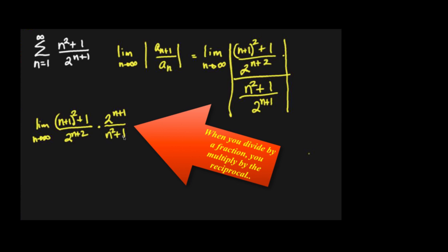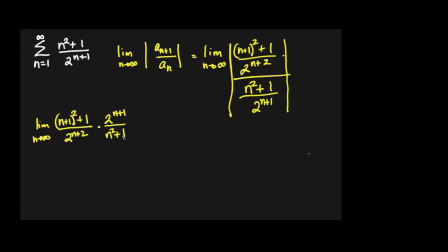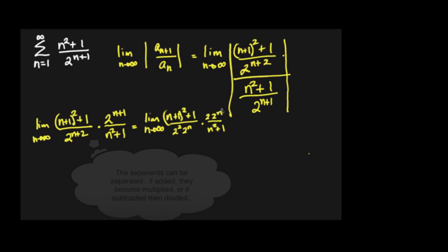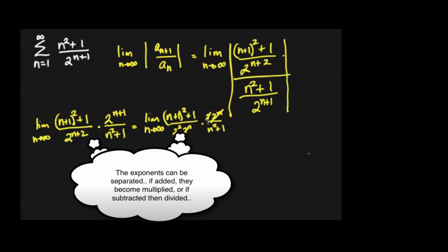Maybe simplify two to the n+2 — try to make it similar to two to the n+1. Or we could rewrite both of them like two to the n times two, and then two to the n times two squared. Or, since we've got two like bases being divided, we can use the exponent subtraction rule. Either way you get the same answer — the n's cancel.